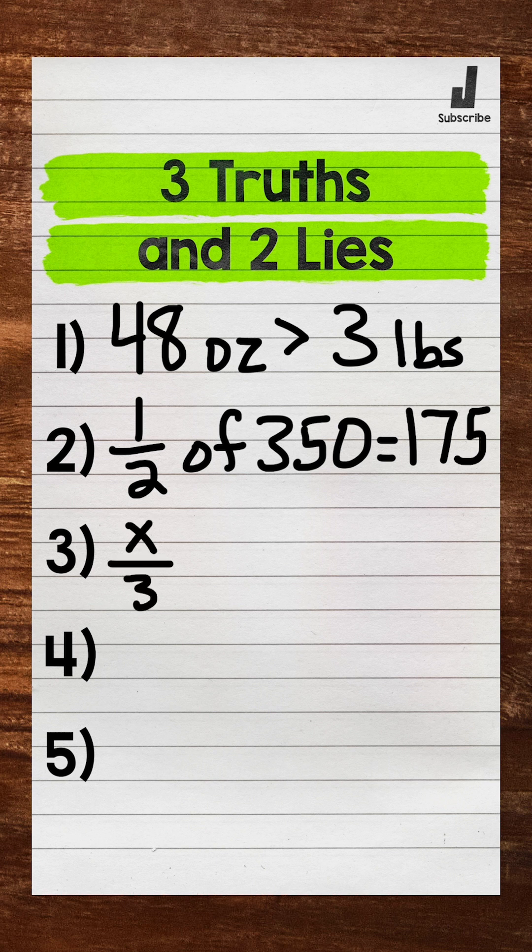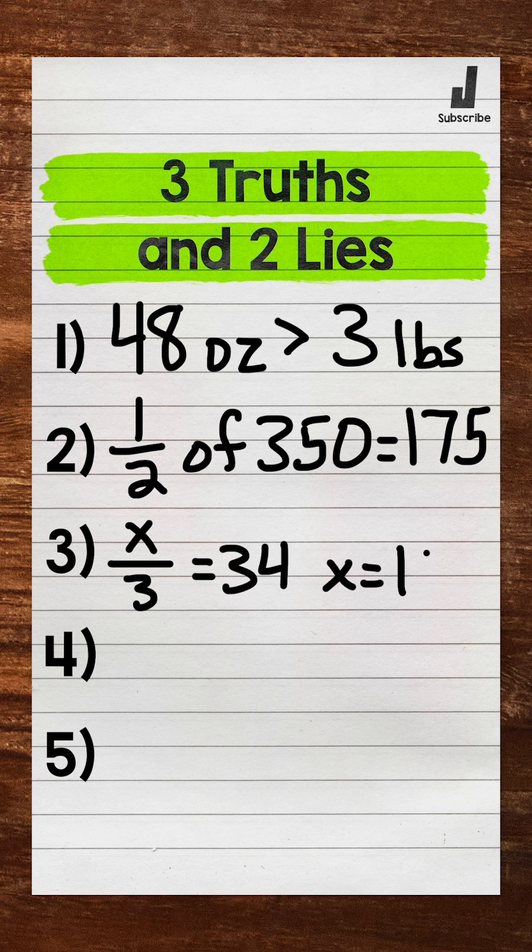For number three, we have x divided by three equals 34, x equals 102.